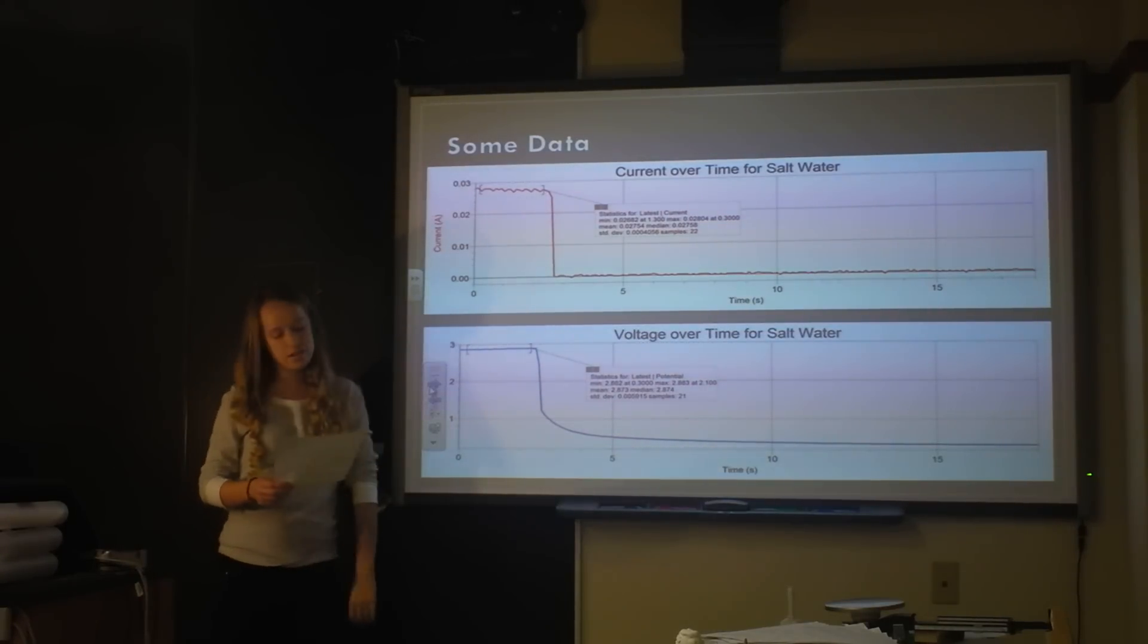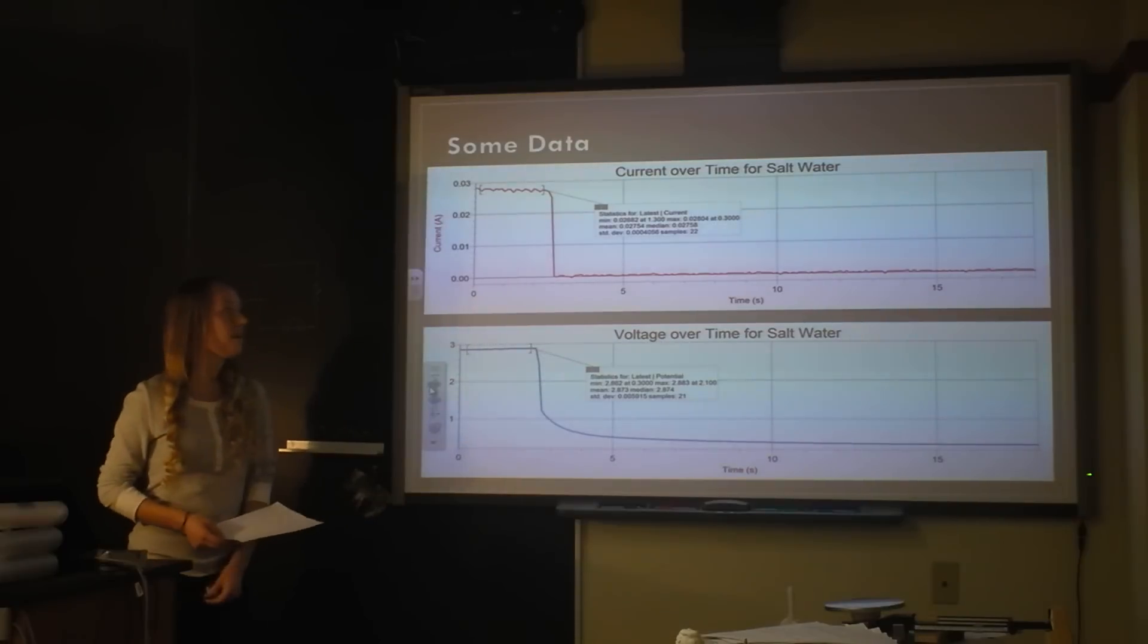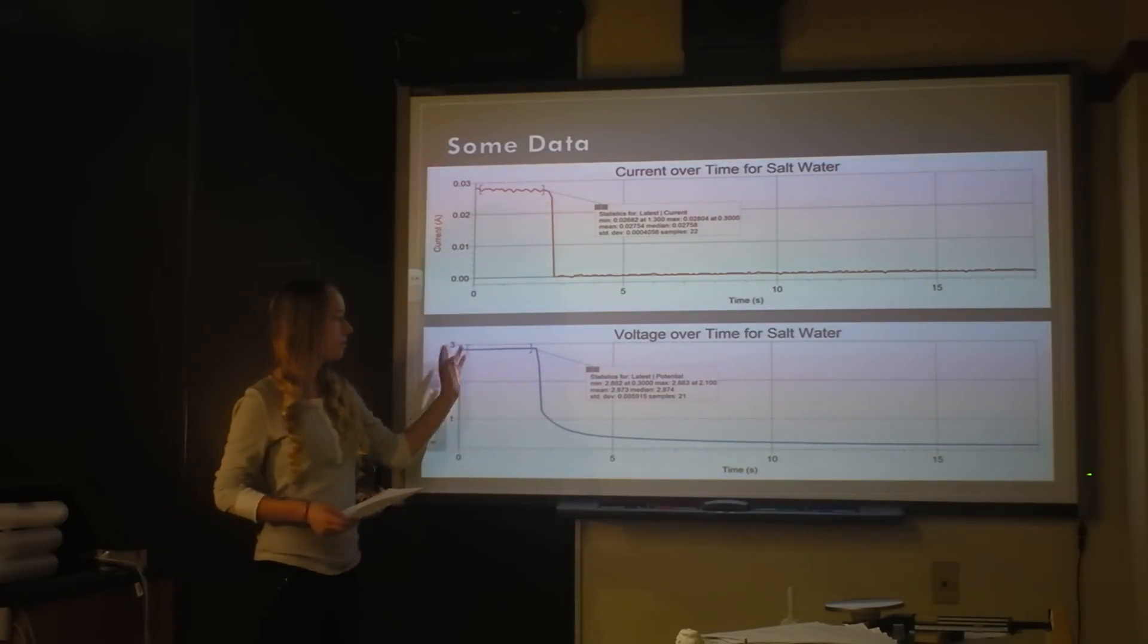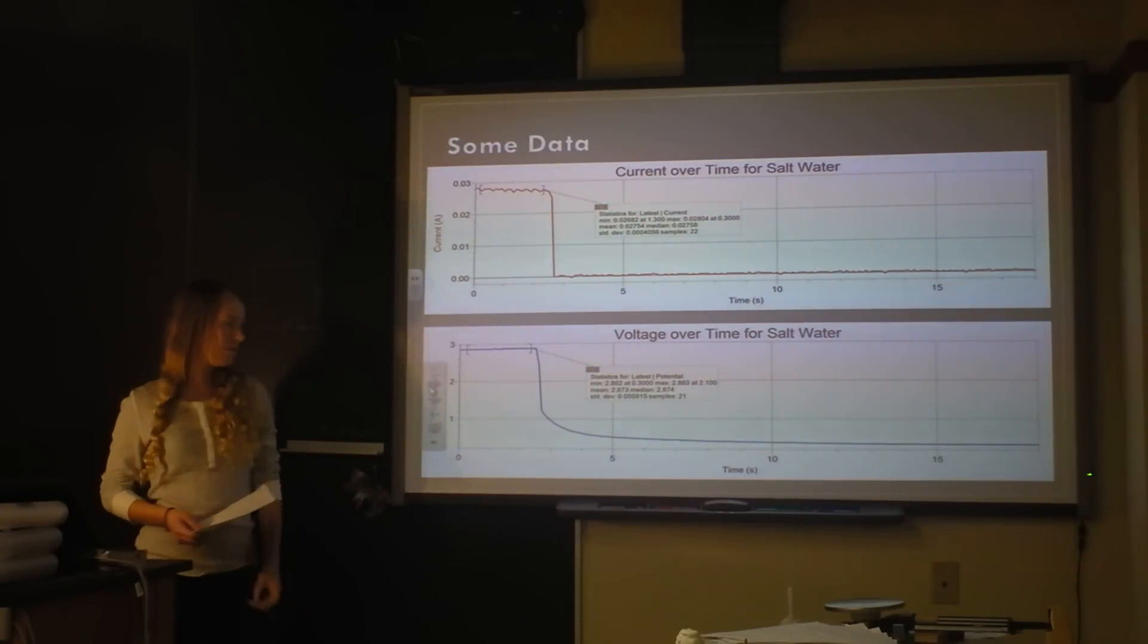This is basically what my data collection graphs looked like. So this was when I was running current through the resistor, and this is when I took the battery out of the circuit. And so I found that after I took the battery out, I was still getting readings for voltage and current. And so basically they were still supplying voltage after I took the battery out. So they were kind of acting as capacitors.